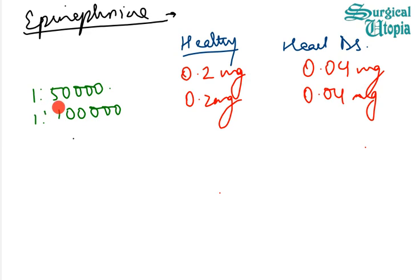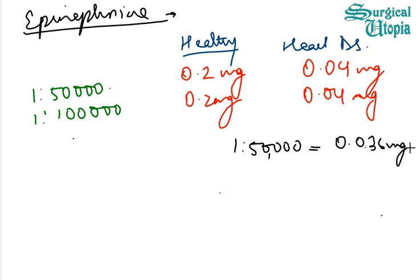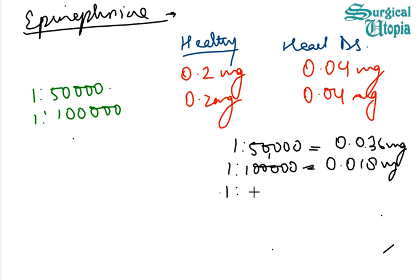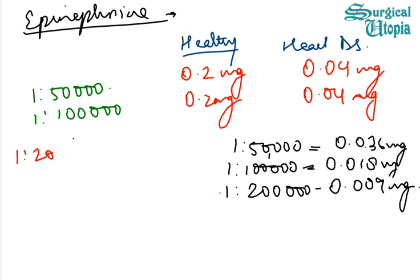The concentration of epinephrine in mg present in each cartridge: for a 1:50,000 concentration there will be 0.036 mg of epinephrine per cartridge; for 1:100,000 it will be 0.018 mg per cartridge. From this we can determine that at a concentration of 1:200,000, the concentration of epinephrine is 0.009 mg per cartridge.